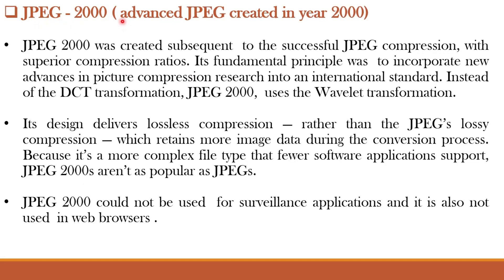Next is JPEG-2000, an advanced JPEG developed between 1997 and 2000. It was created subsequent to the successful JPEG compression standard, offering superior compression ratios. Its fundamental principle was to incorporate new advances in image compression research into an international standard. While standard JPEG uses the discrete cosine transform, JPEG-2000 uses wavelet transform. Its design delivers lossless compression rather than JPEG's lossy compression, retaining more image data. However, as it is a more complex file format, very few software applications support it and it is not as popular as JPEG.